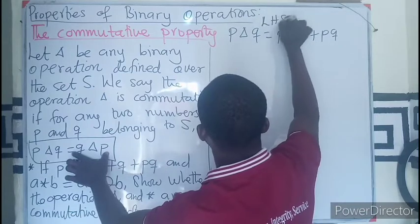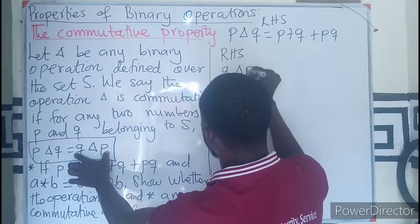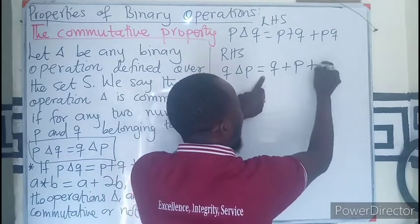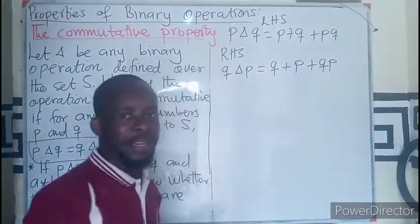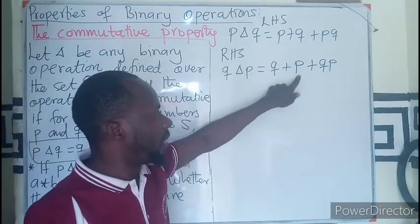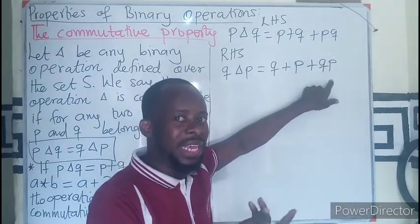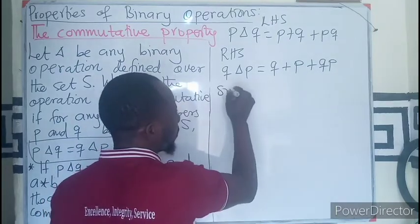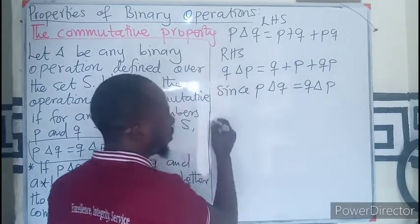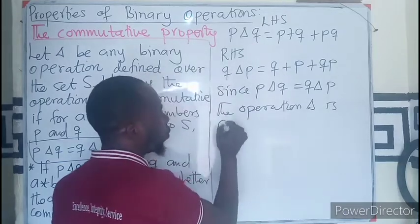Let's take the right hand side, which is going to be Q △ P. Should be the same as the first number plus the second number plus the first times the second. Now we are going to compare the left hand side and the right hand side. P, Q, P, Q. We know by multiplication, as we said, is commutative. So since P △ Q = Q △ P, we can see that the operation Δ is commutative.